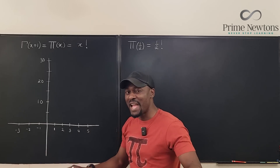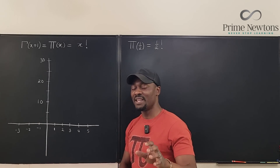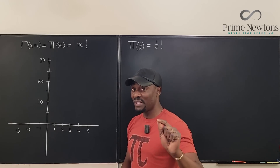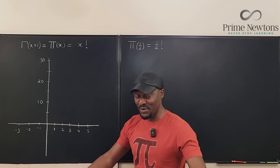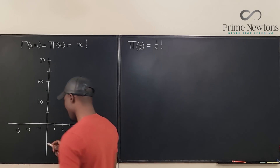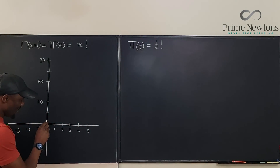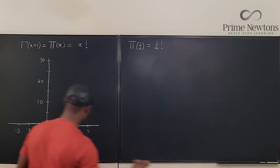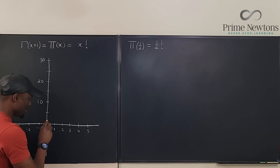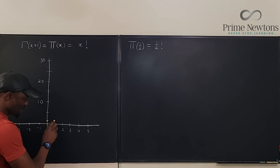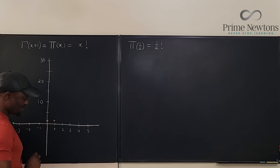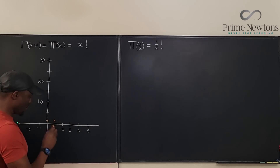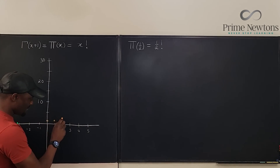Let's try and plot the points of the factorials we know. Zero factorial we have concluded is one, so we plot that point. One factorial is also one. Two factorial is two times one, which gives us two, so it's going to be somewhere here.